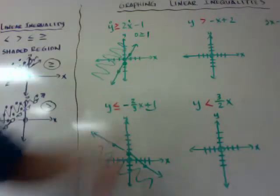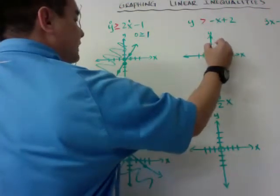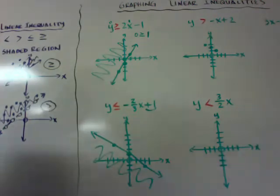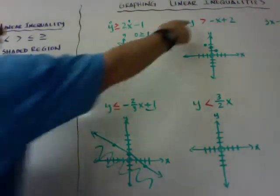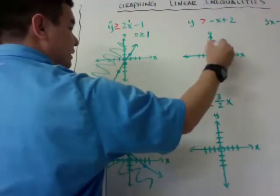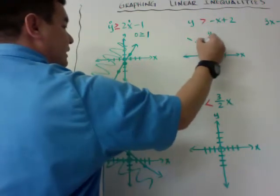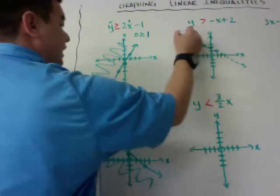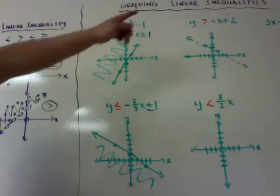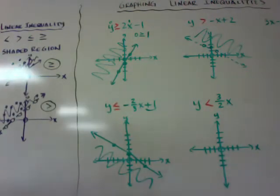My other example is y is greater than negative x plus 2. Start at plus 2. My slope is negative 1, so go down 1 over 1, and up 1 over 1. I should use open circles since it's just greater than. I use a dashed line — make sure it's a clearly dashed line. Because it's greater than, I shade above the line.